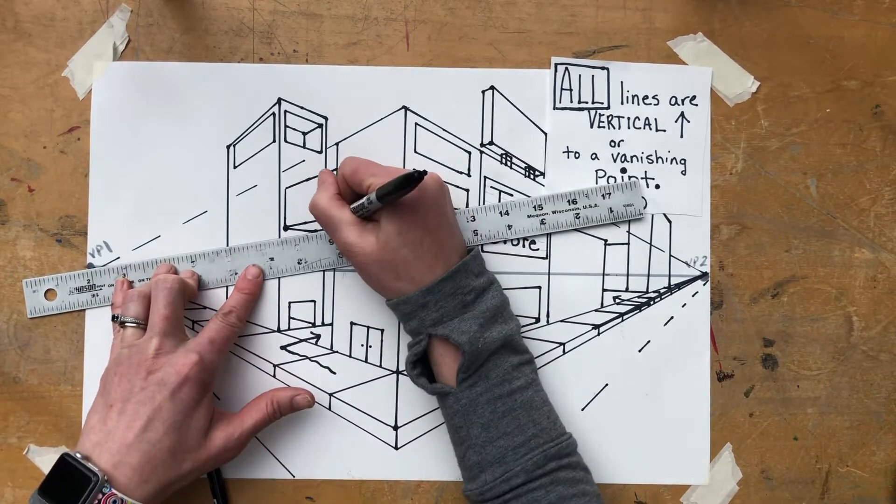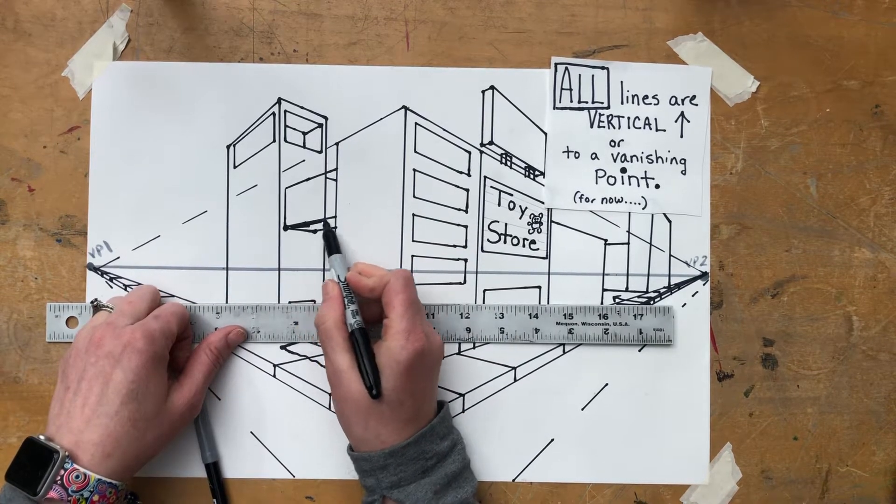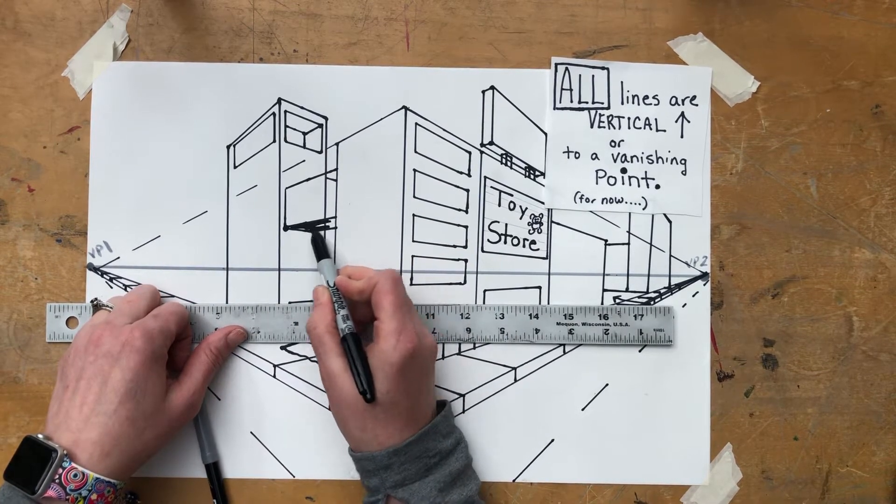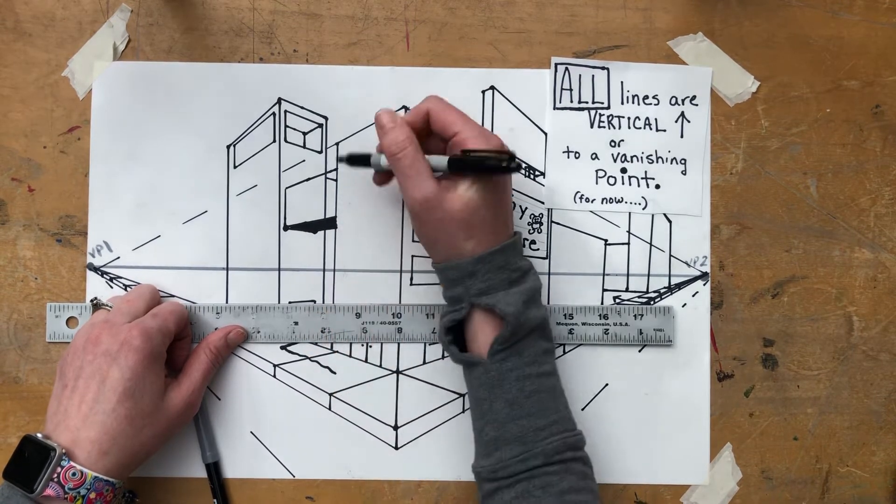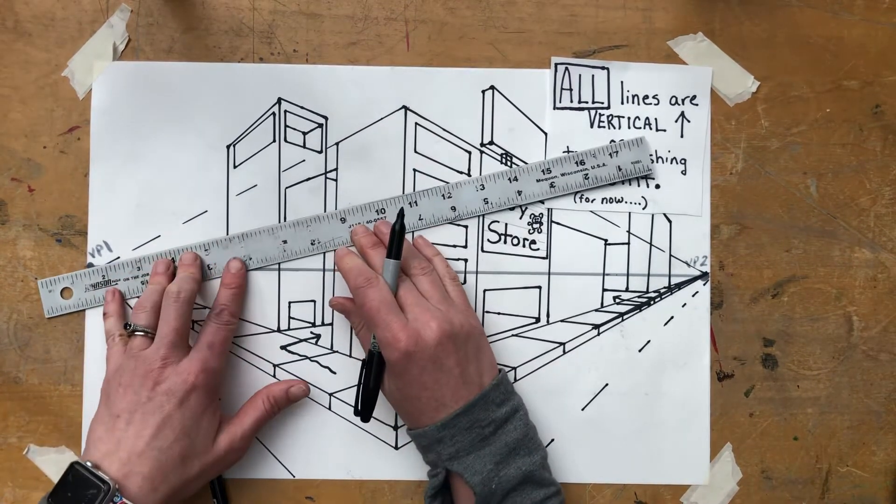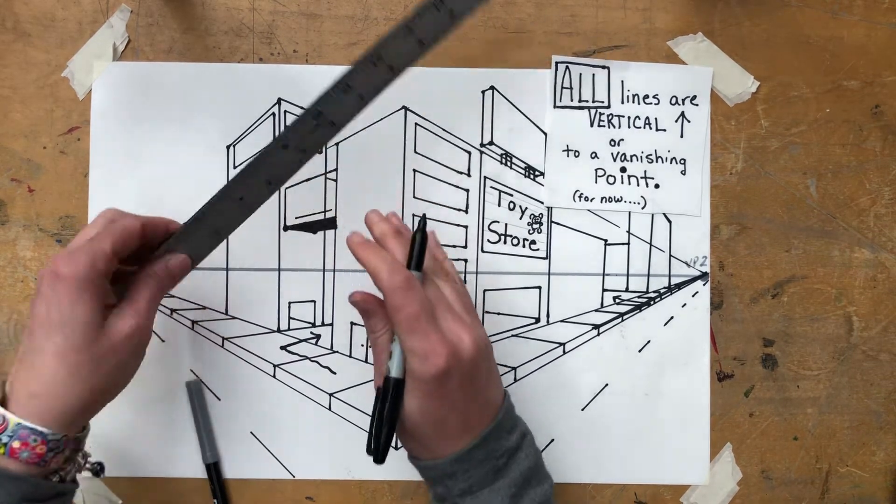And now we have a floor of this skywalk, and I can fill this in if that helps you see it a little bit better. Here's the floor of the skywalk. I'd erase these, but maybe I could make a window on this skywalk by having a line to vanishing point one.